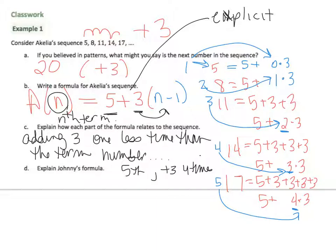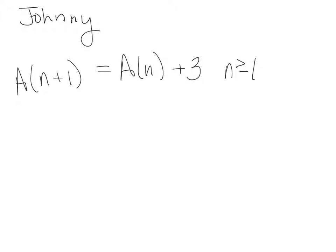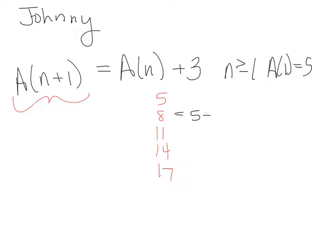There's this guy named Johnny. When Johnny saw the sequence, he wrote the following: a of (n+1) equals a of n plus 3, when n is greater than or equal to 1, and the first term is 5. What does a of (n+1) mean? Looking at the sequence: 8 equals 5 plus 3, 11 equals 8 plus 3, 14 equals 11 plus 3, and 17 equals 14 plus 3. It's always the previous number plus 3.